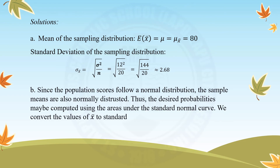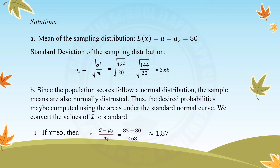Since the population scores follow a normal distribution, the sample means are also normally distributed. The desired probabilities may be computed using areas under the standard normal curve. We convert values of the sample mean to Z-scores. For sample mean = 85, the formula is Z = (x̄ − μ_x̄) / σ_x̄. Substituting: Z = (85 − 80) / 2.68 ≈ 1.87.